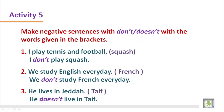The third sentence: 'He lives in Jeddah' — the word in the bracket is Taif. As the subject is third person singular number, we use doesn't in front of the main verb, which is in base form. Notice that in the positive sentence the verb had an s — lives — but in the negative it is just the base form — live. 'He doesn't live in Taif.'